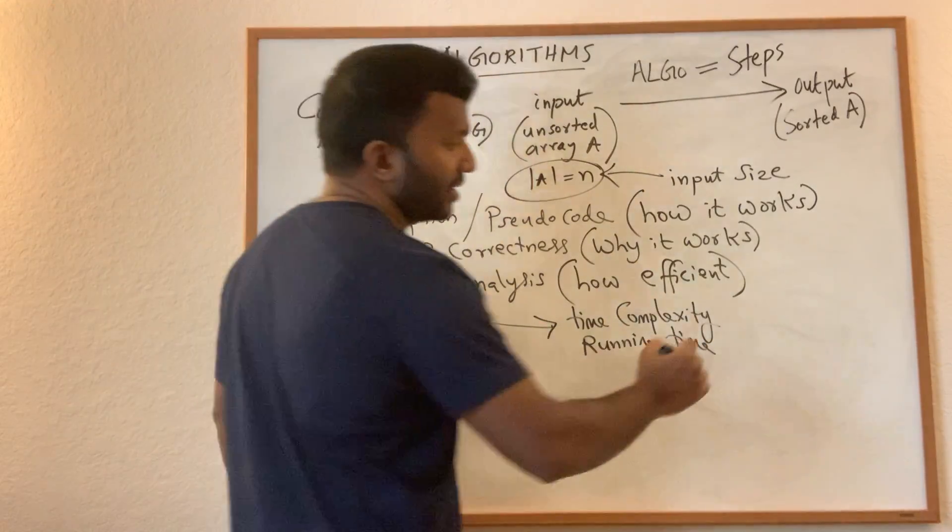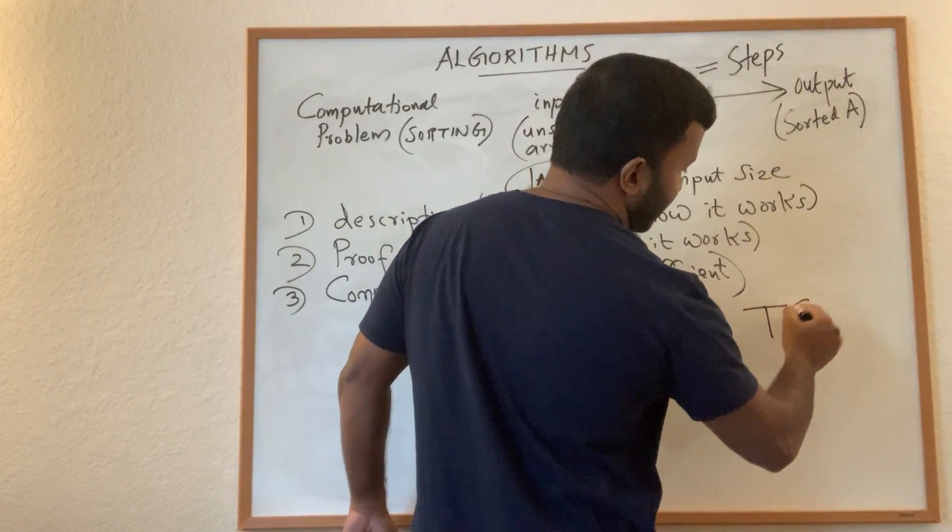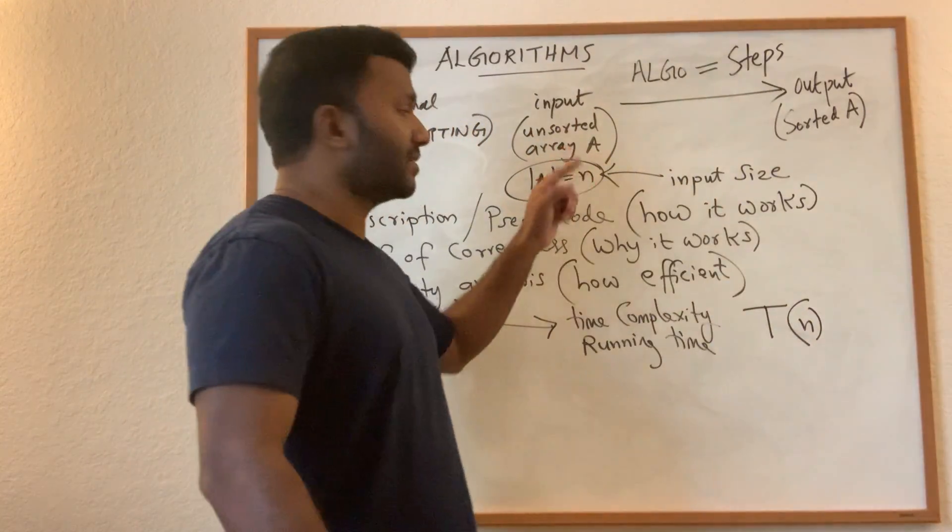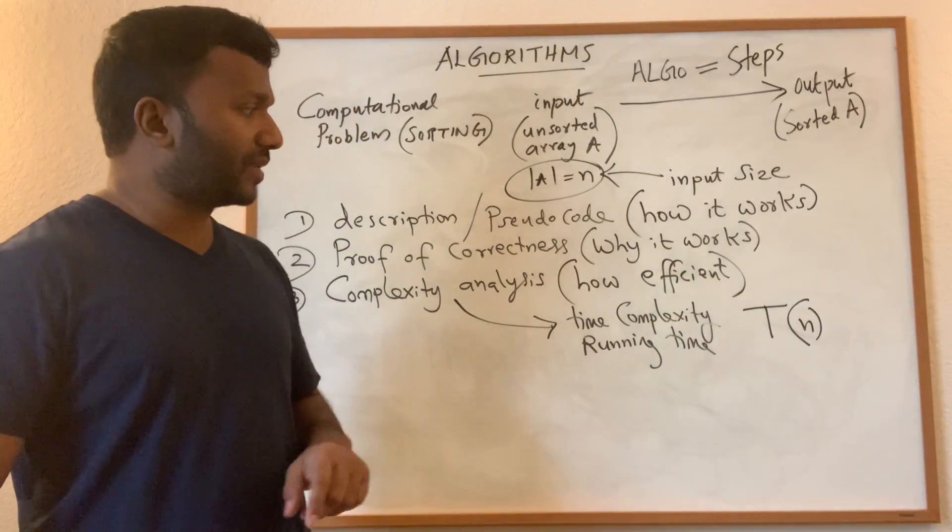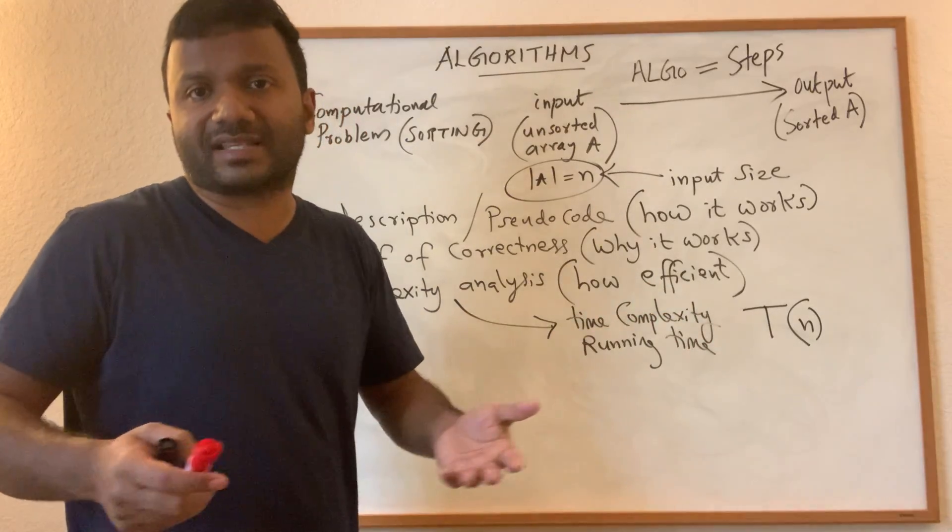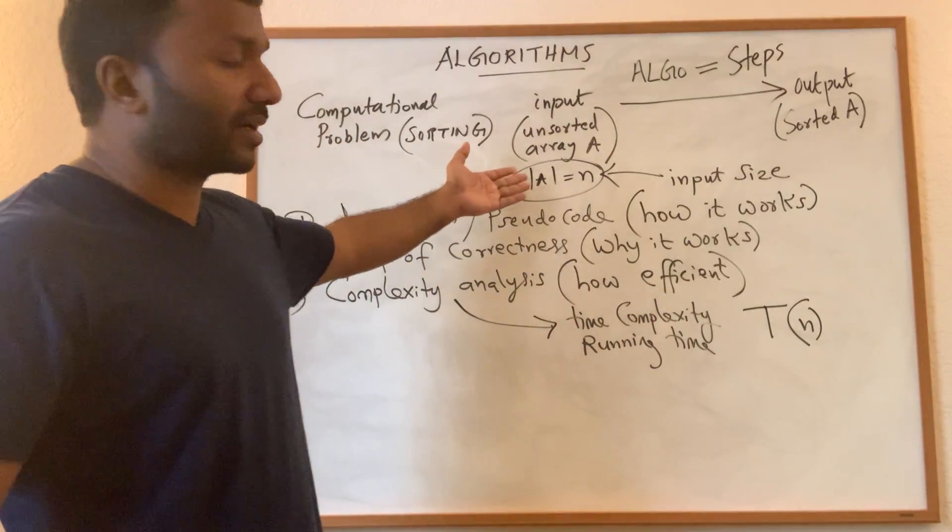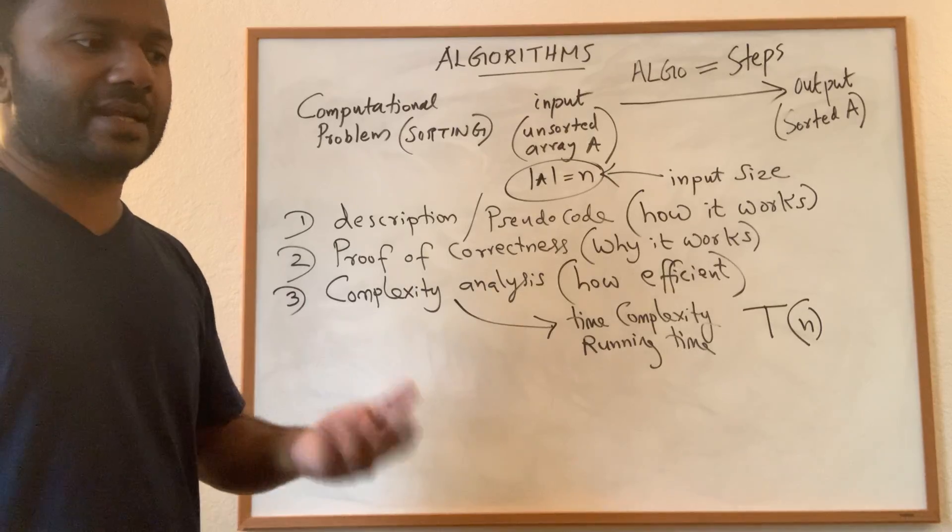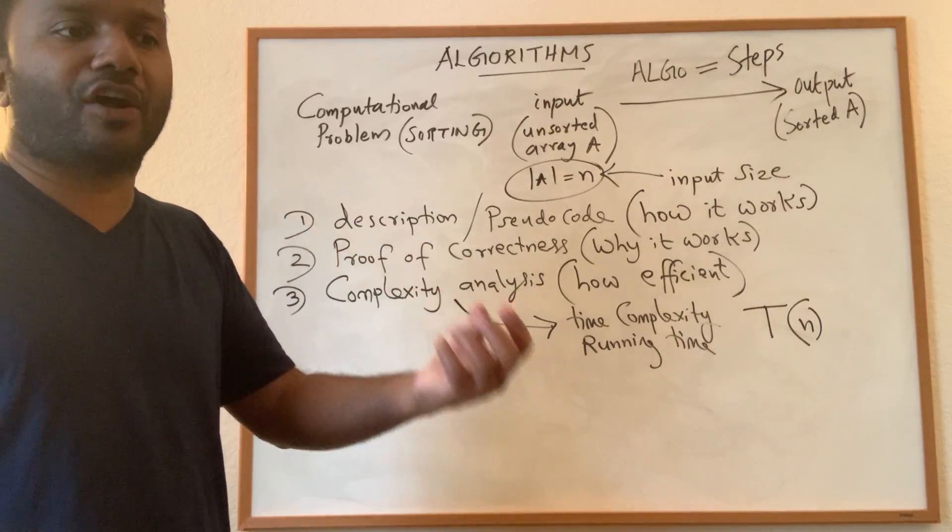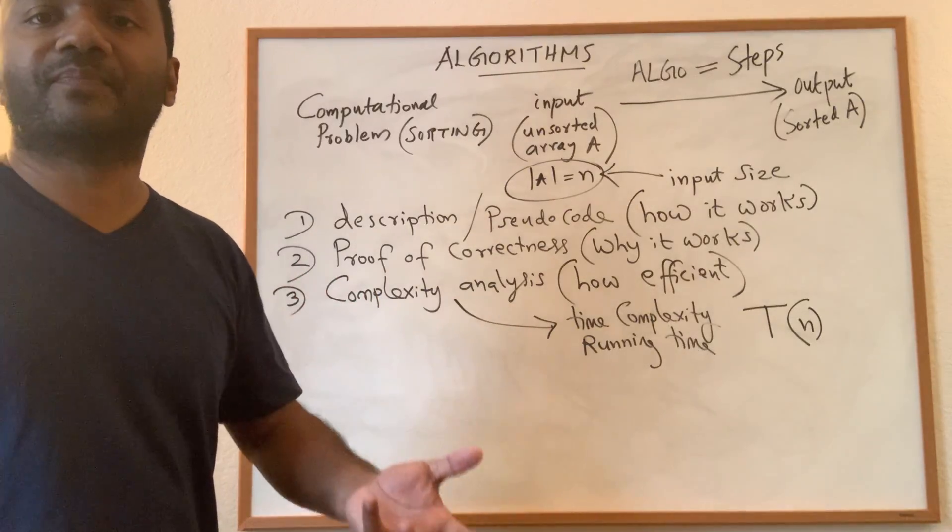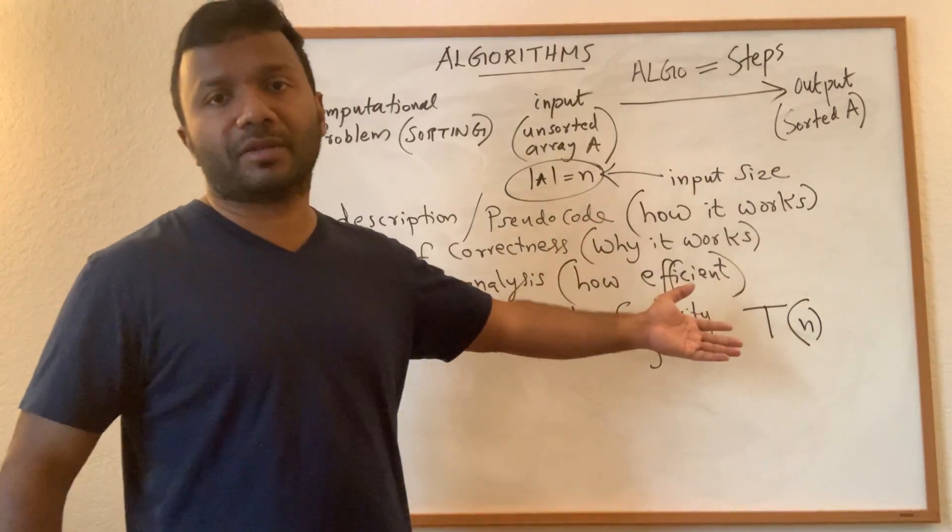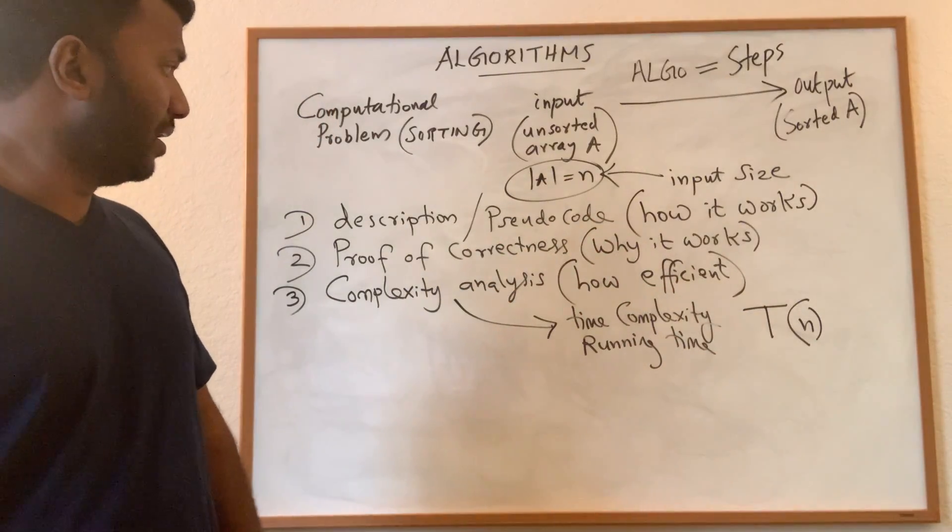So mostly we are concerned with the time complexity or the running time. And usually this running time is expressed in terms of a function, function T of n where n is the size of the input. So this function can take even multiple arguments. For example, in some cases there may be more than one input parameters. So let's take the example of a graph. In the case of a graph we need to specify how many edges are there and how many vertices are there. So this T can be dependent on both parameters.